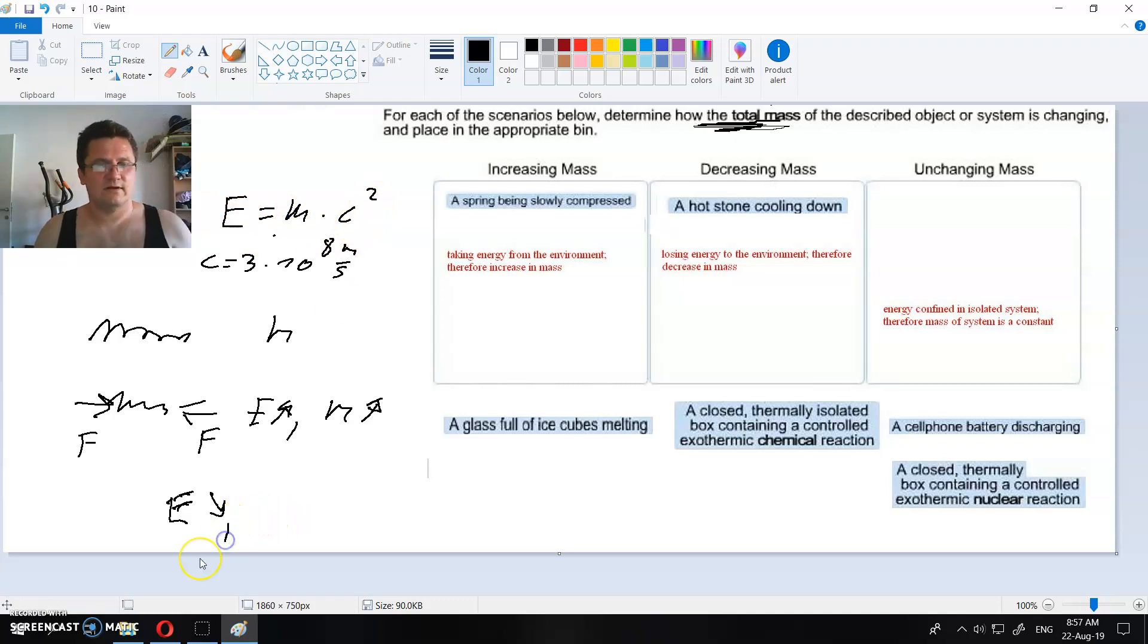And according to this equation here, if the energy decreases, mass will decrease also, because the speed of light is constant. Energy decreases, mass of the hot stone will decrease also. The decrease in mass is very small, it cannot be measured directly with our equipment, but it exists.